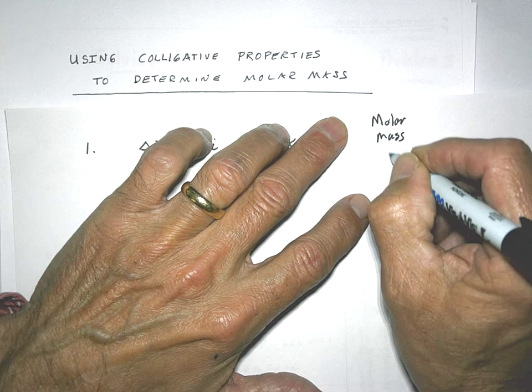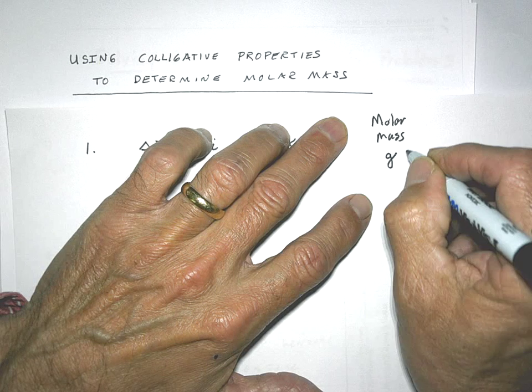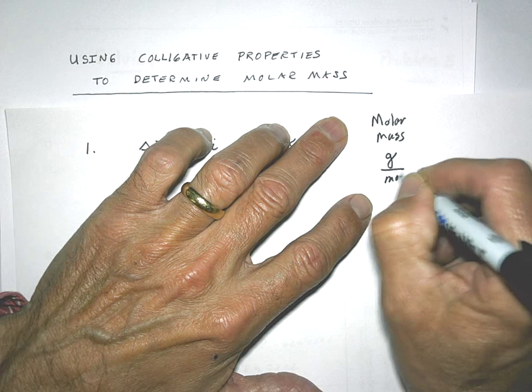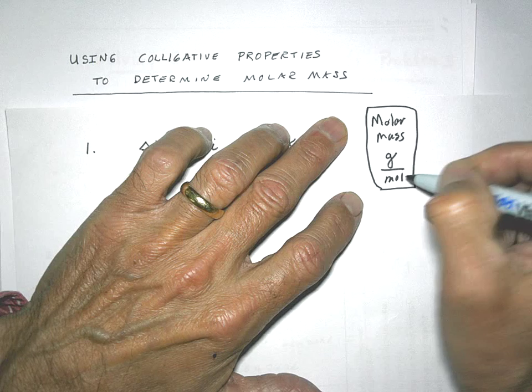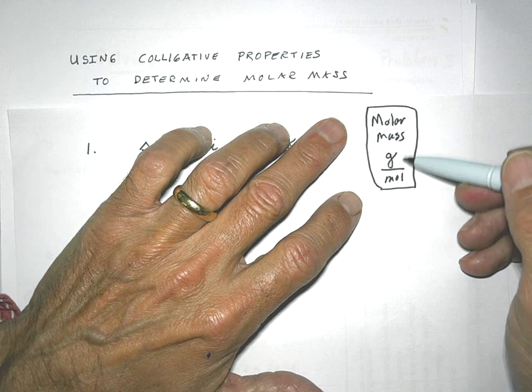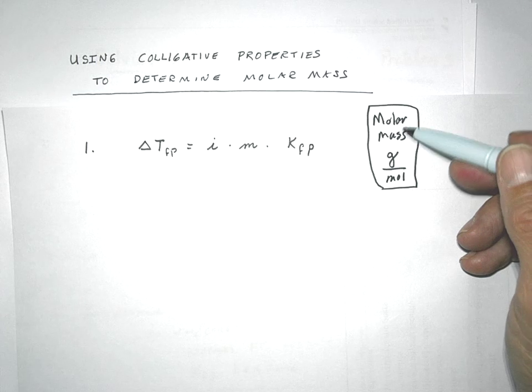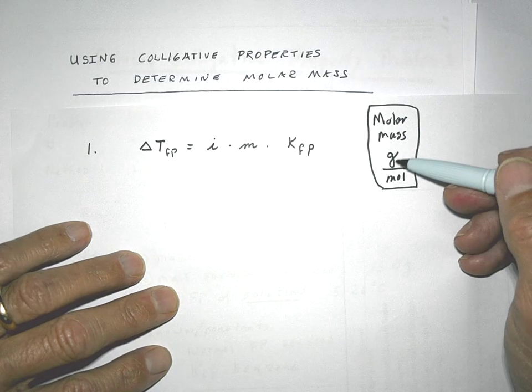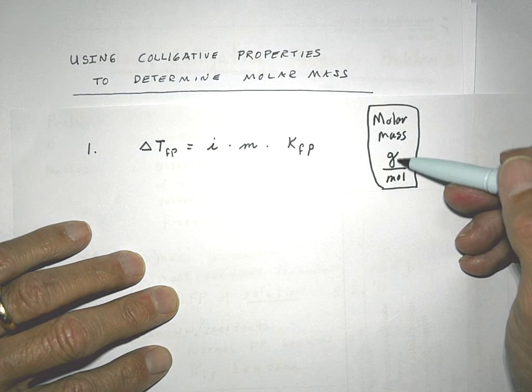And remember, molar mass is the mass per mole of a substance. So that's going to be kind of our final calculation. Well, we've got to do some work before we get there. But ultimately, we need to find the mass of this unknown substance per mole.